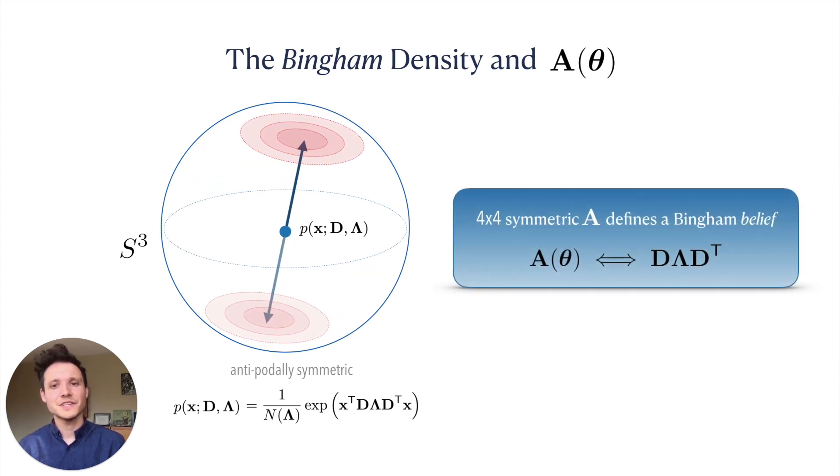Serendipitously, our symmetric matrix A defines a Bingham distribution over the three-dimensional unit quaternion sphere. This allows us to interpret our representation as encoding a belief over SO3.